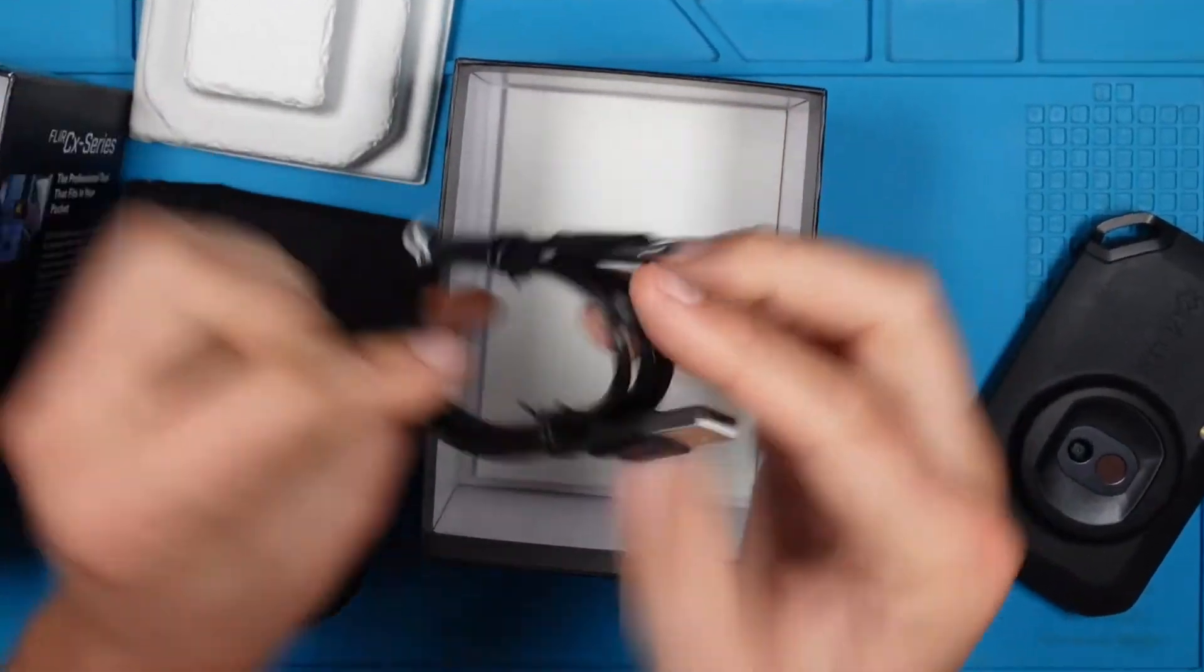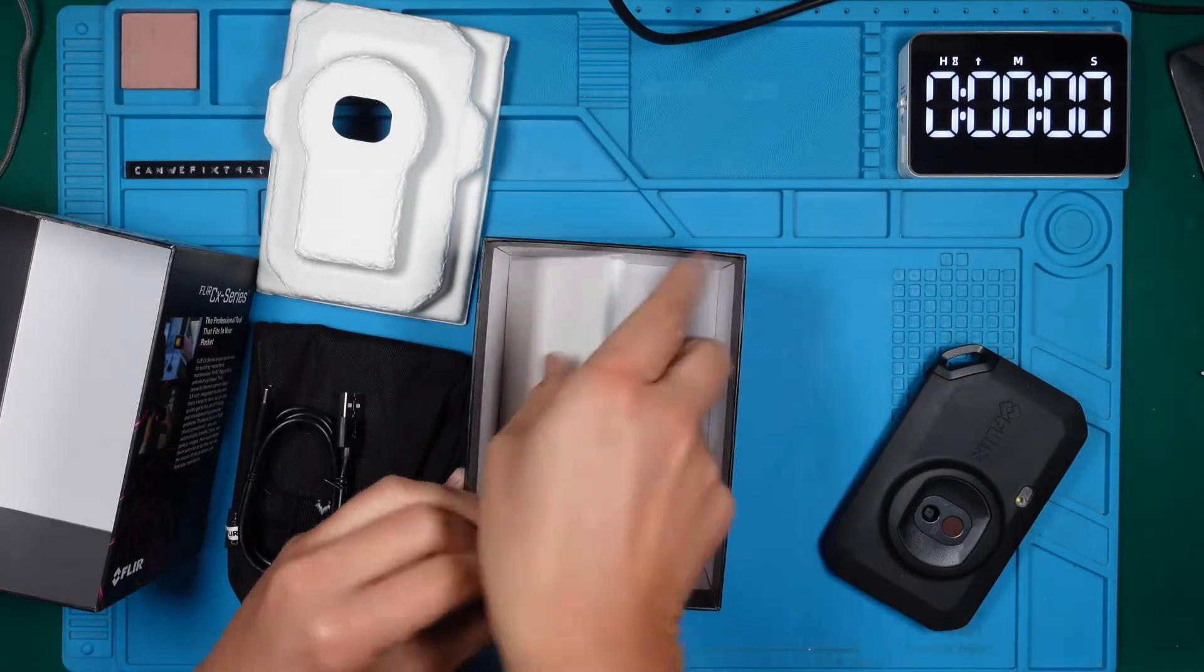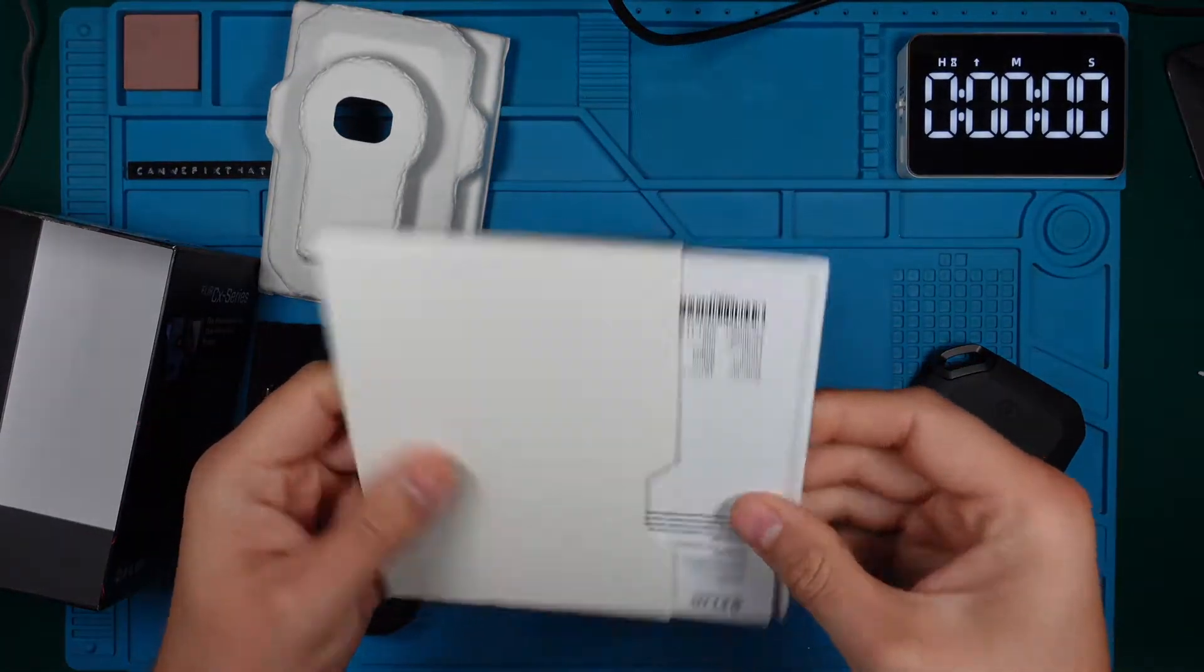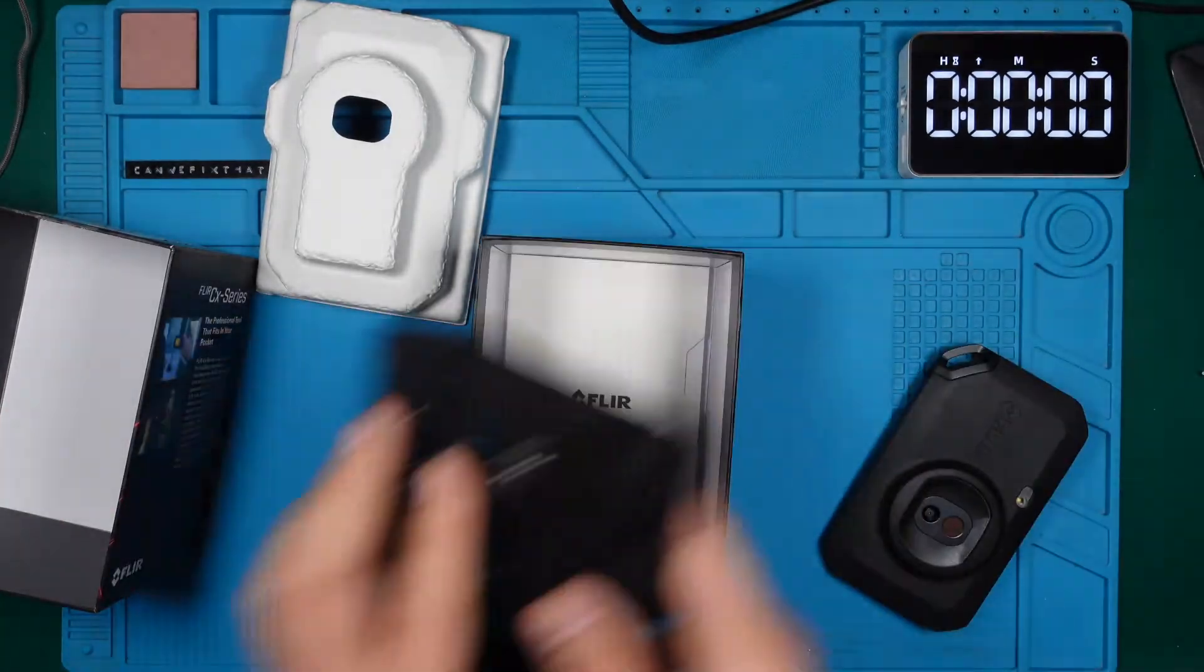We also have a USB-A to USB-C cable. And of course, the usual paperwork. Nice! By the way, it seems the hand strap is missing here. Let's get rid of the box.